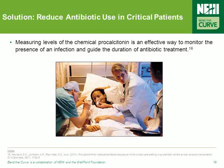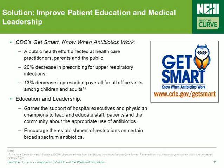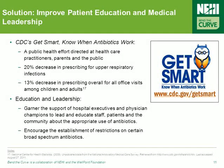Another study found that measuring levels of the chemical PCT in the body is an effective and innovative way of monitoring the presence of an infection and guiding the duration of antibiotic treatment for a patient. This reduces the likelihood of administering antibiotics past the point where they're effective, particularly in critical patients. One of the more well-known and effective campaigns to reduce the use of antibiotics is the CDC's Get Smart: Know When Antibiotics Work program, a comprehensive public health effort directed at healthcare professionals, parents, and the public. The CDC's program has led to an impressive 20% decrease in the prescribing of antibiotics for upper respiratory infections and a 13% decrease in prescribing for all office visits among both children and adults.